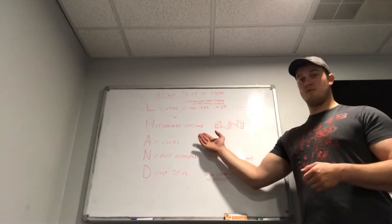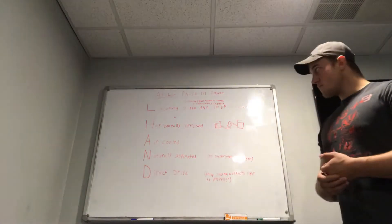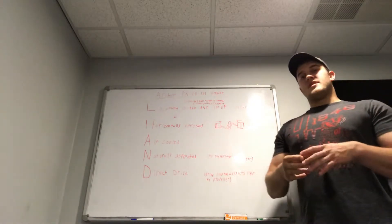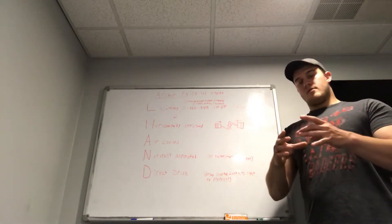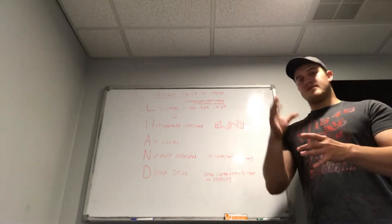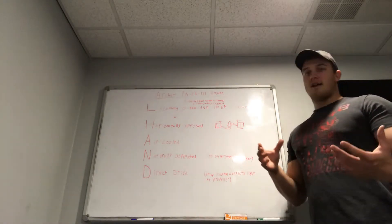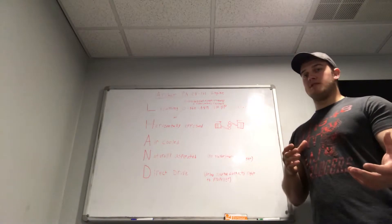O stands for horizontally opposed, which I'll get to in a second. And then 360, that is the actual size of the bore for the cylinder that the piston slides up and down inside of. And in avionics, it's measured in cubic inches.